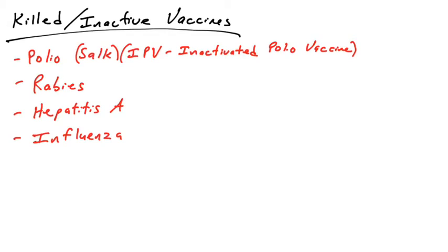Examples of killed or inactivated vaccines include the Salk polio vaccine, also known as the inactivated polio vaccine, the rabies vaccine, hepatitis A, and some influenza vaccines.